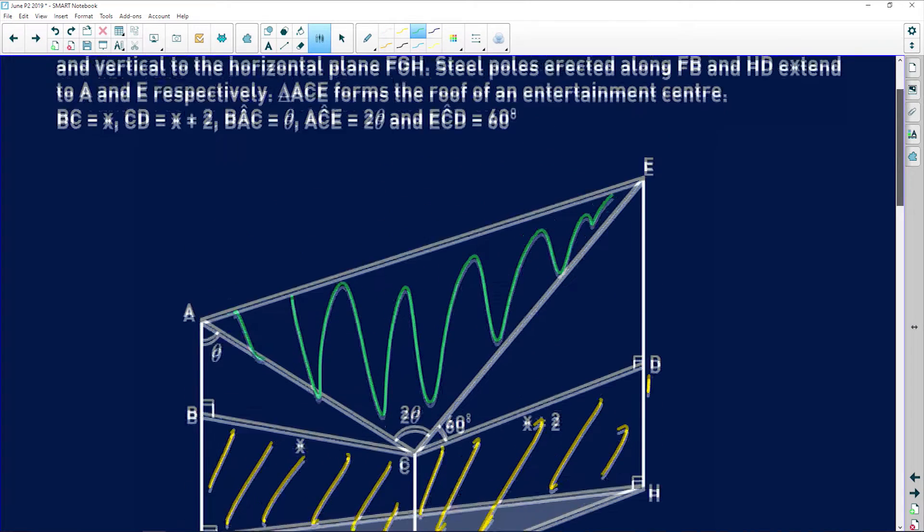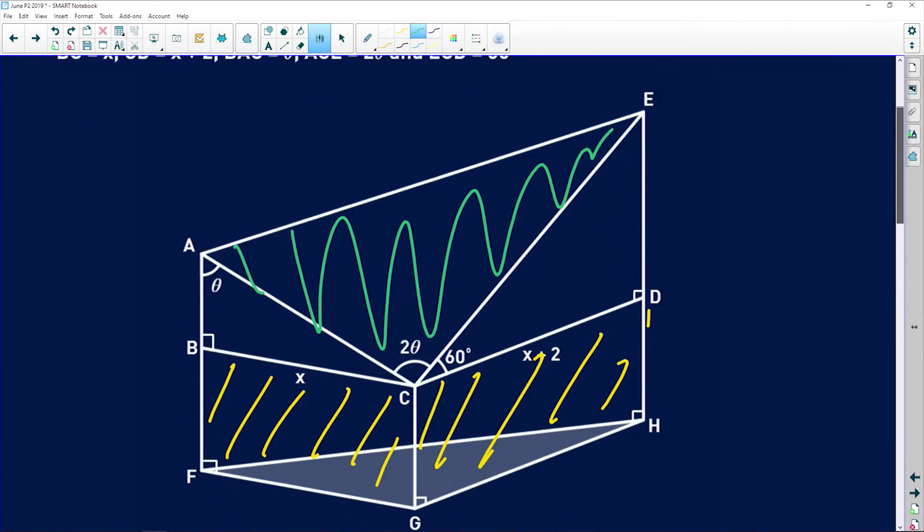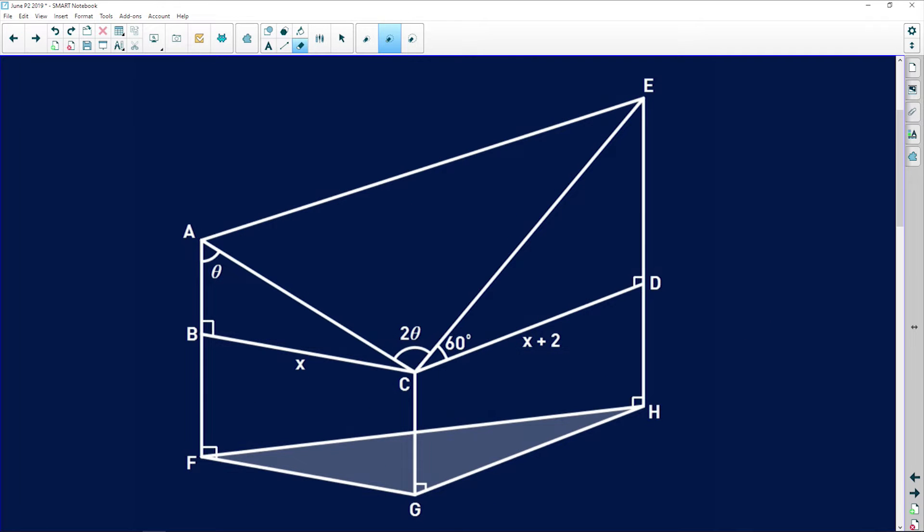So you can't be working in these as like joint shapes. They sit at 90 degrees. There's a flat roof, so that's what you need to picture. Lastly, it says that BC is equal to x, CD is equal to x plus 2, angle BAC is θ, angle ACE is 2θ, and angle ECD is 60 degrees, and they've put all of that on our diagram here. So let's get rid of all of that.